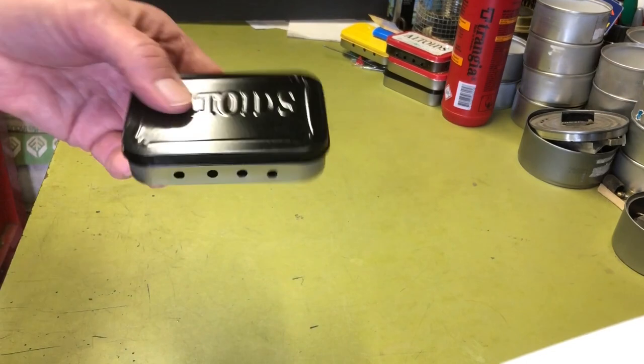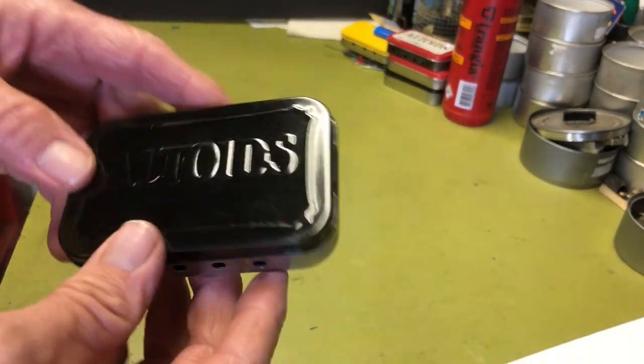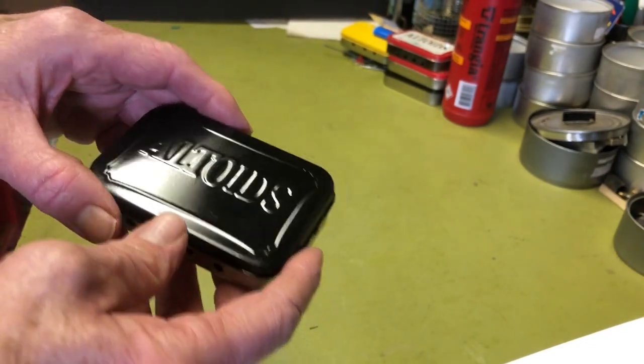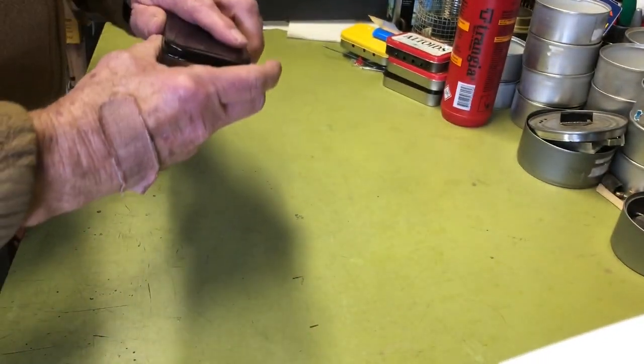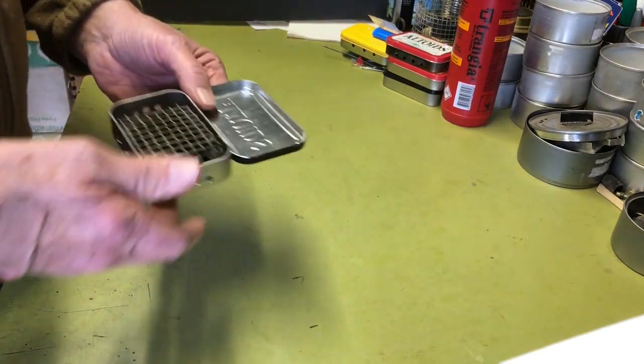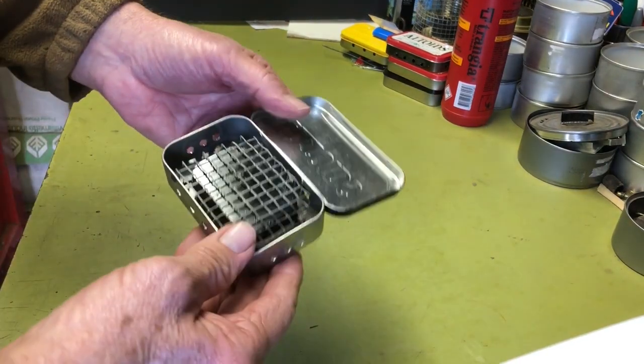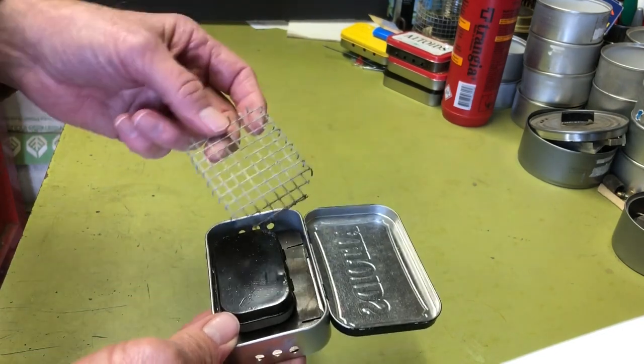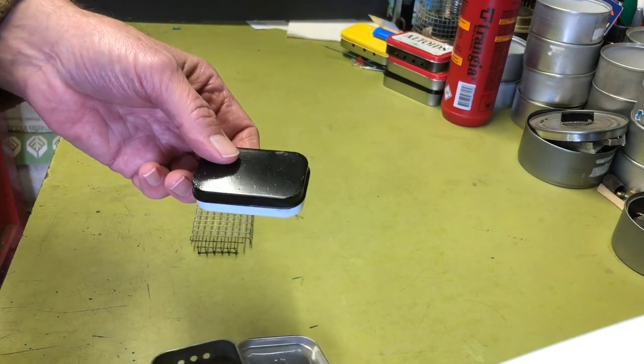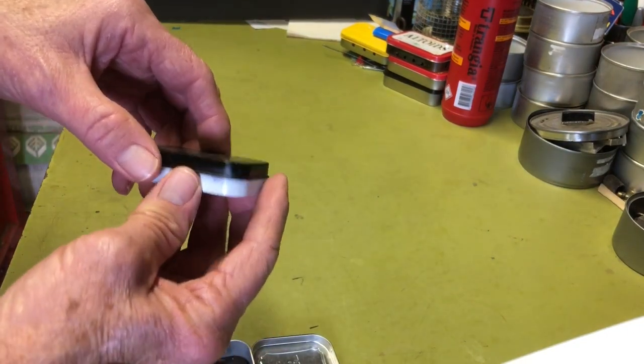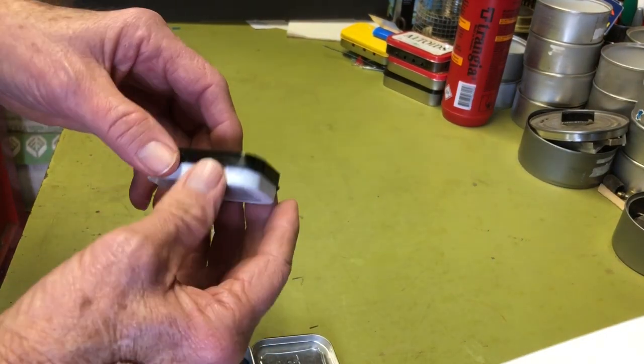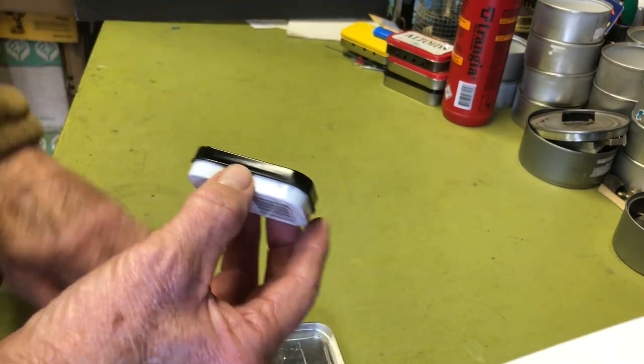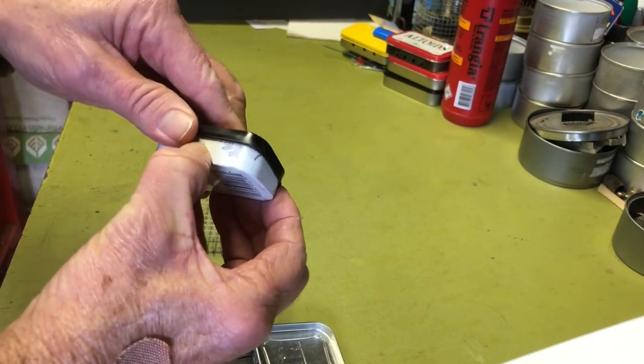So standard Altoids tin, I did paint this one with some automotive engine paint, just for fun. And what we have here on my version, and I'll discuss the differences here in a sec, is a little grate to get the fire up off the bottom of the pan. And then, this is an Altoid tin alcohol burner that Waypoint Survival also did. He did a bunch of Altoid stuff that I thought was pretty neat, so I made my own, but this is my version.